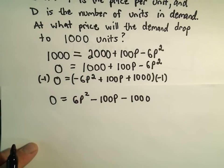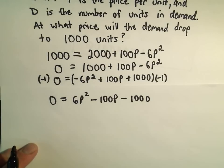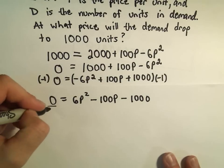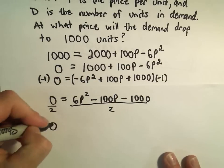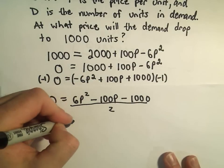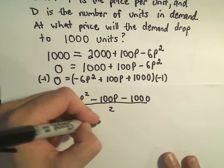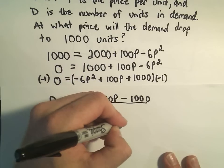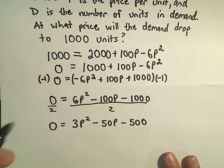And just to make the numbers a little bit smaller, I'm also going to divide both sides by 2. So on the left we have 0, on the right we would have 3P squared minus 50P minus 500. And I think that's about all we can divide by here. That was the greatest common factor.